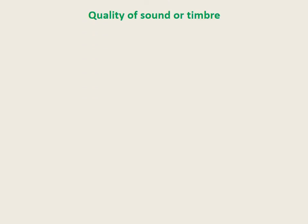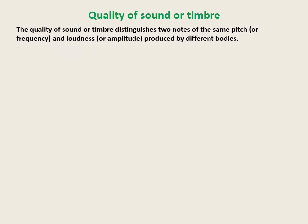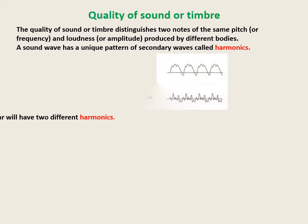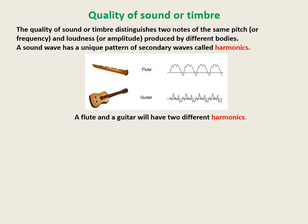Quality of sound or timbre. The quality of sound or timbre distinguishes two notes of the same pitch or frequency and loudness or amplitude produced by different bodies. Consider sound produced by two different musical instruments — a bongo and a guitar — with the same pitch and loudness. The two instruments will still produce quite distinct sounds. This happens because a sound wave also has a unique pattern of secondary waves called harmonics. No two musical instruments can have the same harmonics, which is why the quality of sounds produced by two instruments are always distinct.